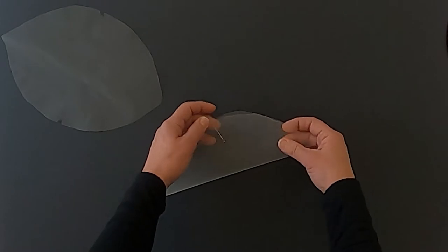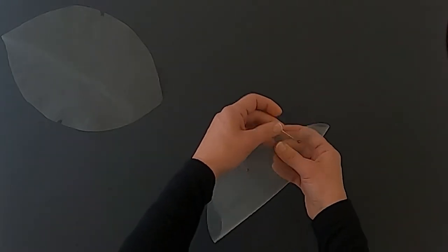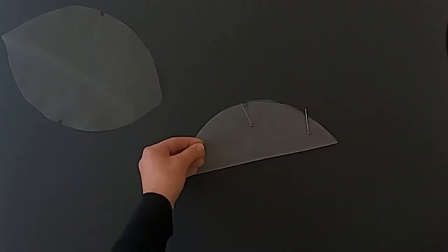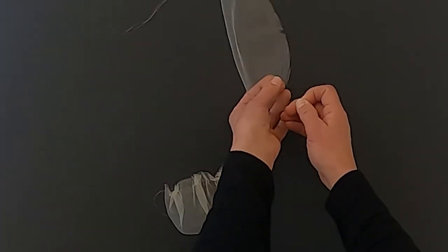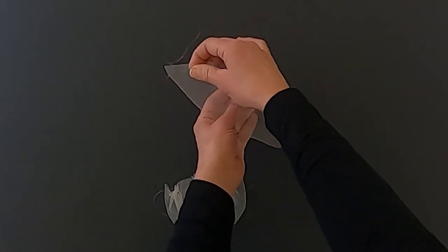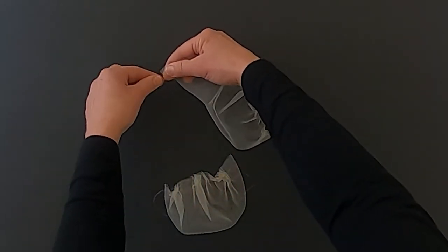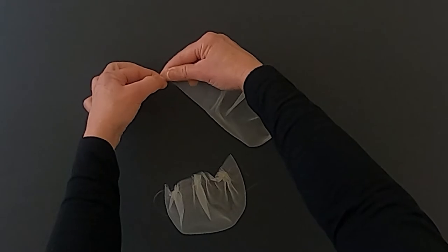First we're going to fold the sleeve head poof in half so that the curved edges with the notches meet. Set your machine to the longest basting stitch and we're going to stitch three-eighths of an inch away from the raw edge of that curved notched edge of the sleeve head poof. Leave the thread tails long and do not backstitch.